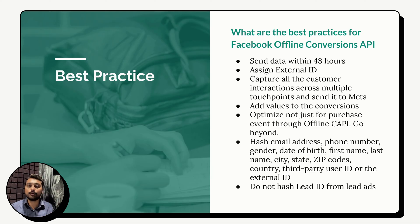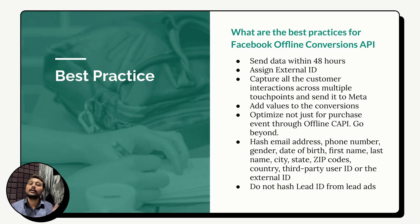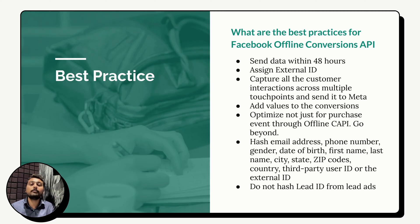Number two: assign an external ID. For all the users that land on your website through ads or whose data you're sending from your CRM, they should have an external ID. When you assign an external ID, it becomes easier for Meta to match because the same user has that external ID when they land on your website, and when you send the same user's data from an offline source with the same external ID, Meta can match and identify that user better.